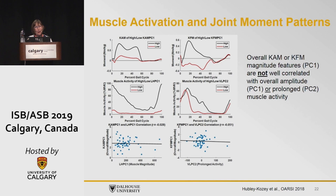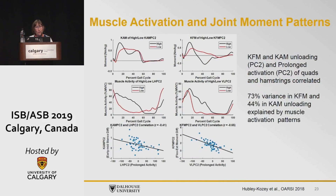The knee flexion moment magnitude is not associated with patterns. However, when we look at those unloading patterns for the knee adduction moment and the knee flexion moment, a high score for both indicates greater unloading. Greater unloading is not associated with more prolonged activity — it is a negative association, showing that individuals who have greater unloading don't have prolonged activity.